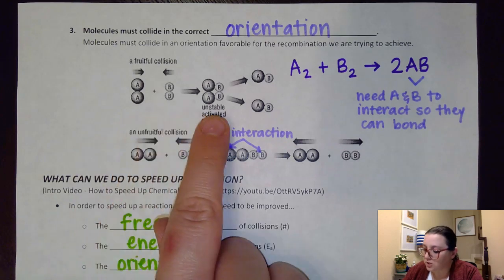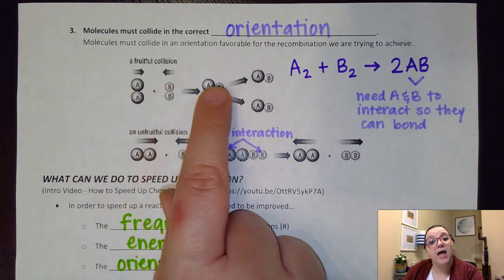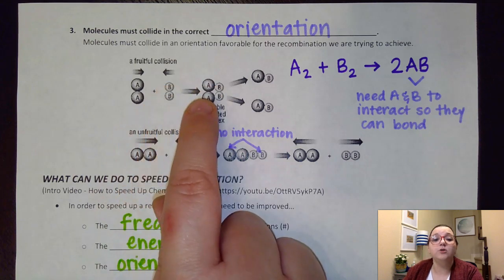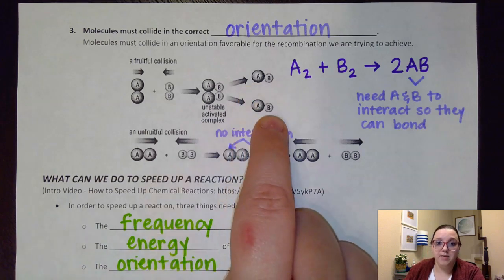So on this first collision here, what's happening is that A and B hit, the A and the B from each of these molecules can interact with each other. Which means as those bonds break and we have enough energy to break them, as they reform we can make those new bonds between A and B.